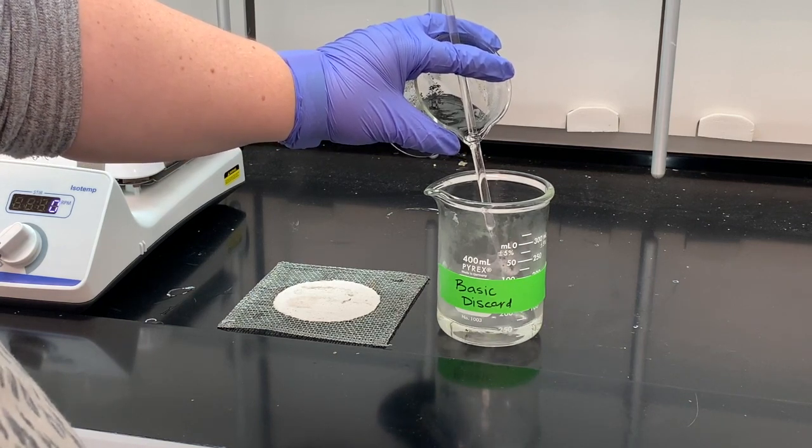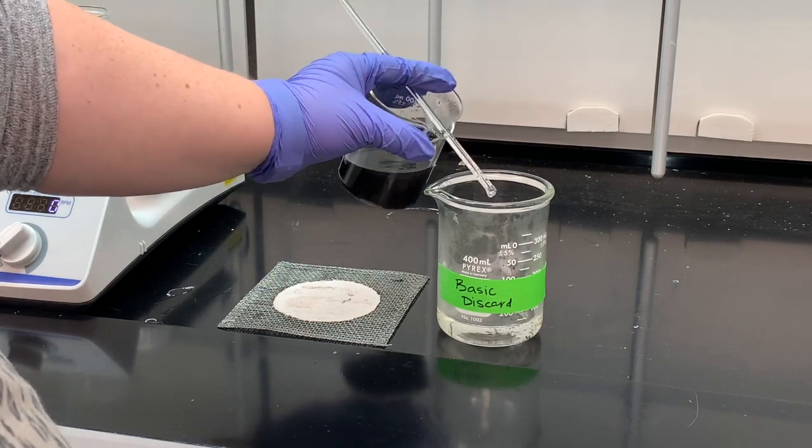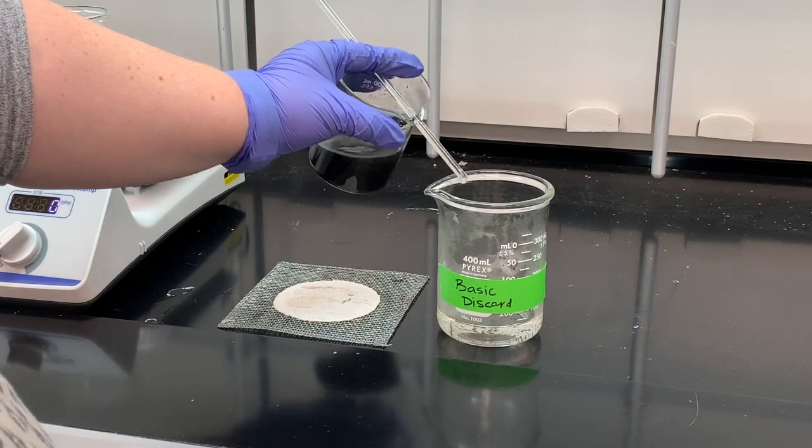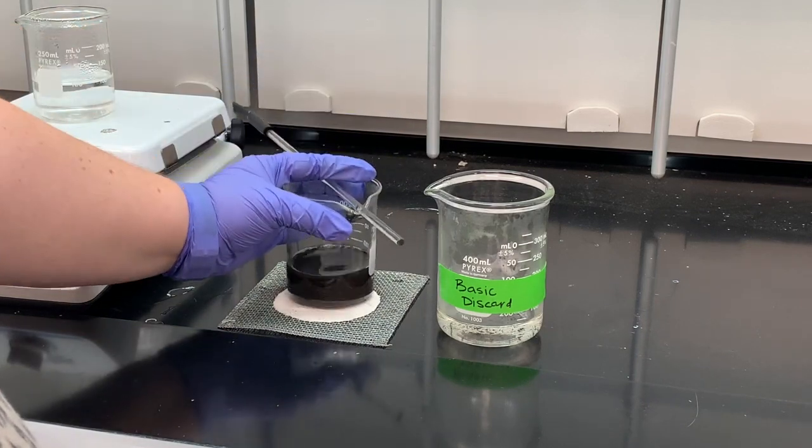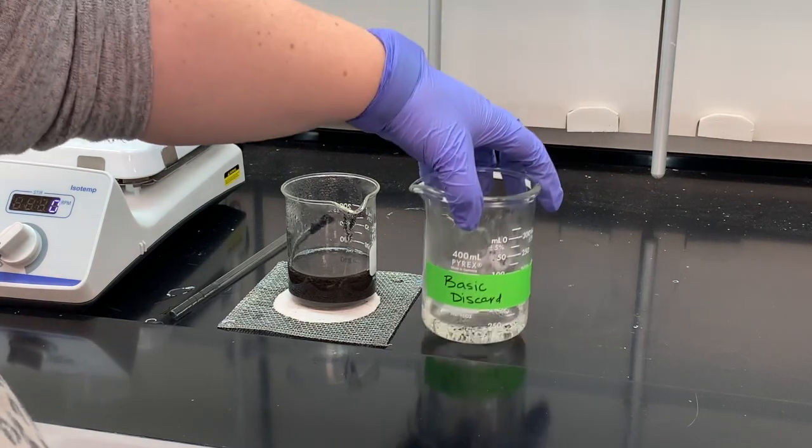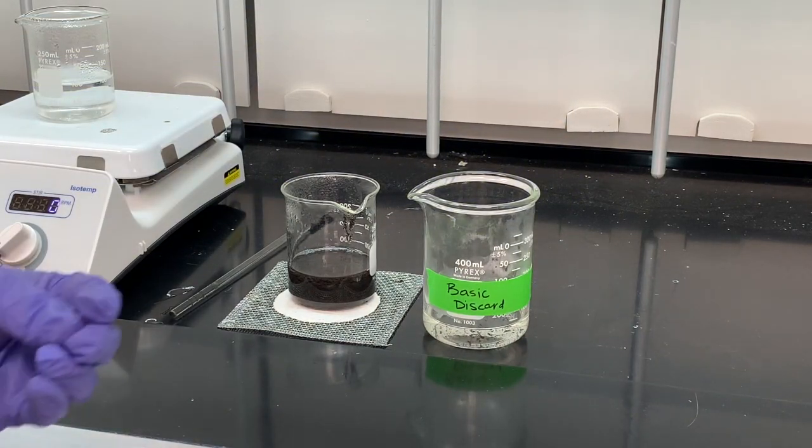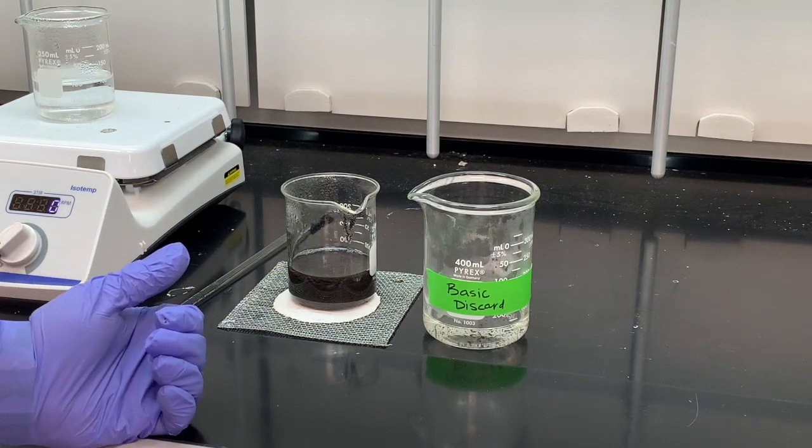And we're not going to be able to decant to dryness. So I started seeing some of my black solid start coming out, so I'm going to go ahead and stop decanting. And in my waste beaker I did get a little bit of solid.